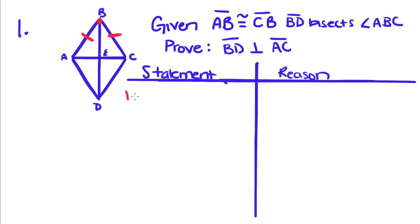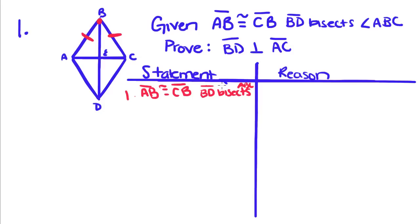The first thing we're going to do is rewrite our given. AB is congruent to CB, and BD bisects angle ABC. I've got to save some room because this is going to be one of the longer proofs we've done. The reason for those statements is: given.